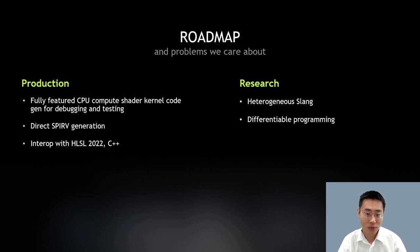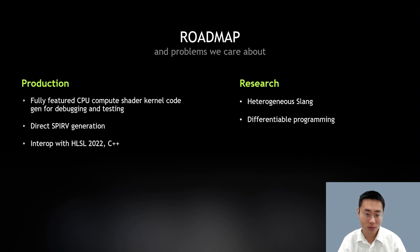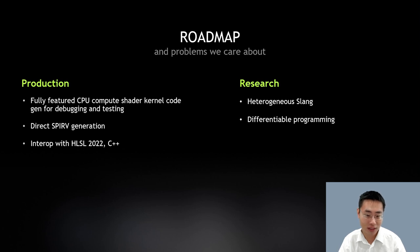Besides these two benefits, we have many plans to make Slang more helpful. On the production side, we plan to implement full CPU code generation for compute and ray tracing shaders so developers can debug their shaders with a traditional CPU debugger. Currently Slang works by generating HLSL and GLSL source and calls DXC and GLSL to generate binaries. We'd also like to get the Slang compiler capable of emitting SPIR-V directly, and provide more flexible ways to interop with HLSL 2022 and C++.